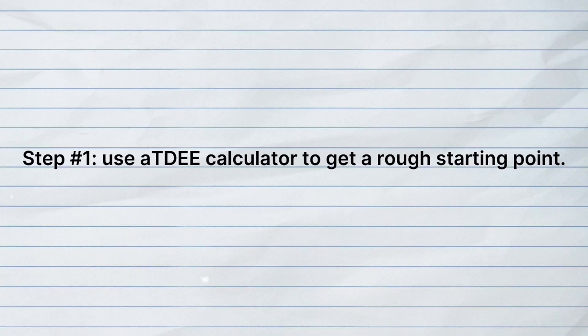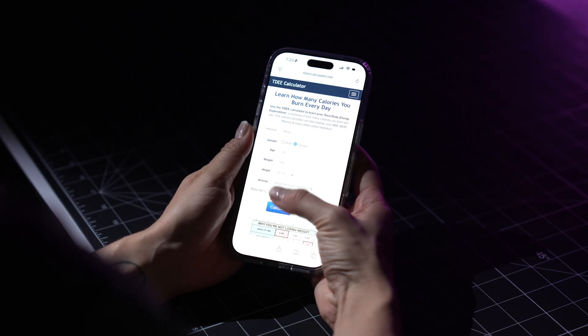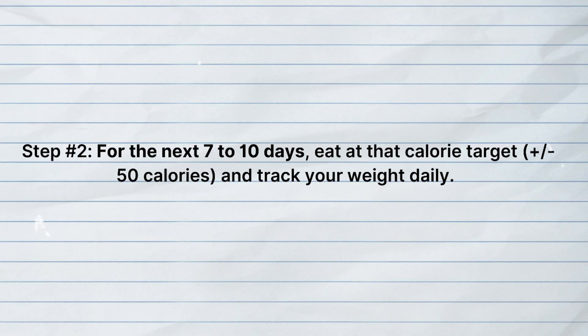Now let's talk about how to find your true maintenance calories, because most calculators are only going to get you so far. This is what I have my clients do — it's super simple and it's going to give you a much more accurate representation than any formula alone. Step one is to use a TDEE calculator to get a rough starting point. Think of this more as a best estimate and not a forever number. Step two: for the next seven to ten days, eat at that calorie target, give or take up to about 50 calories, and track your weight daily.